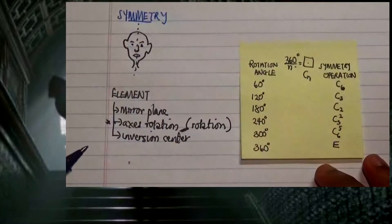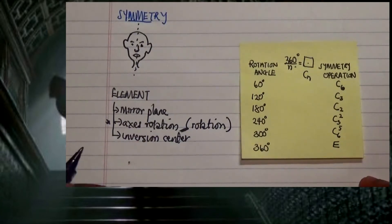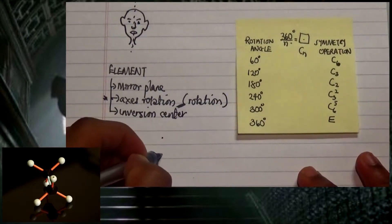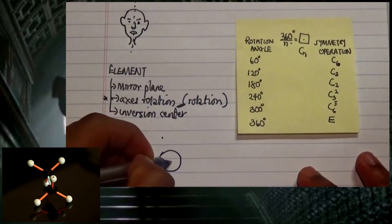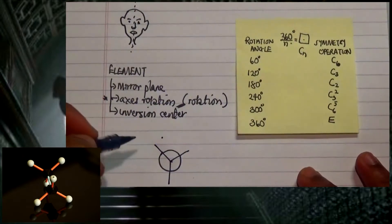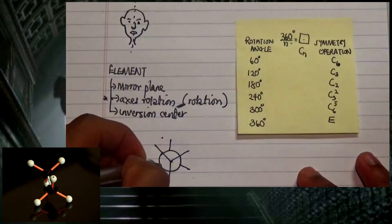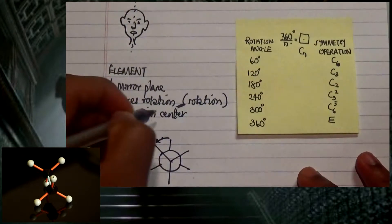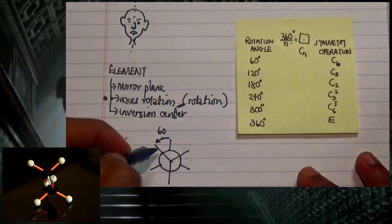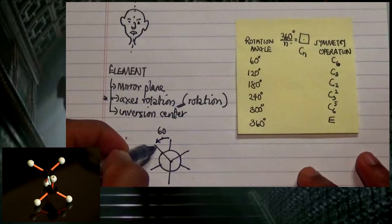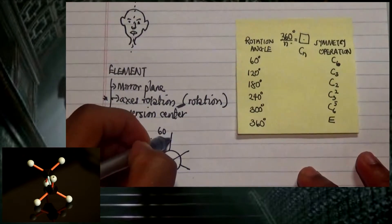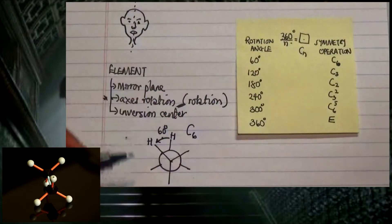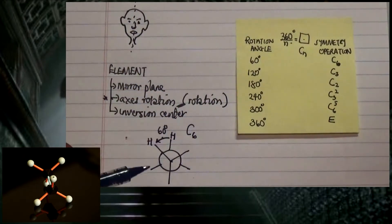An example of C6: let's look at the eclipsed form of ethane using a Newman projection. We have the hydrogens on the front carbon and the hydrogens on the back carbon. The angle between a front hydrogen and a back hydrogen is 60°. So if I make a 60° rotation of the front carbon relative to the back, I get a C6 symmetry operation.